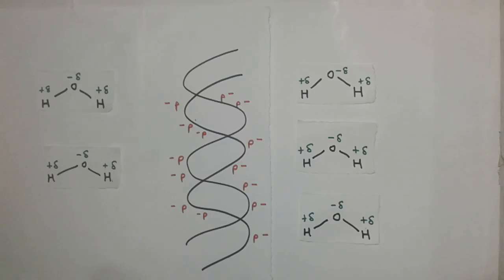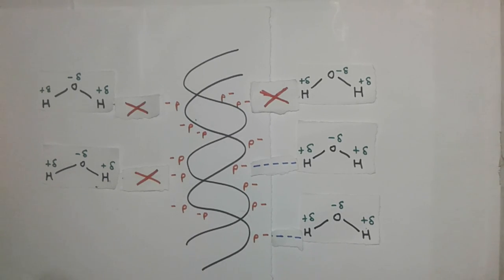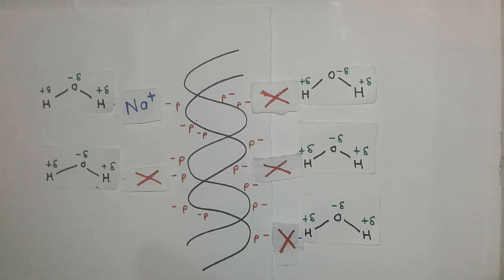So somehow if this interaction between the phosphate of the DNA and water is broken, then the DNA can be precipitated out of water. Well, this can be done by the addition of sodium ions.